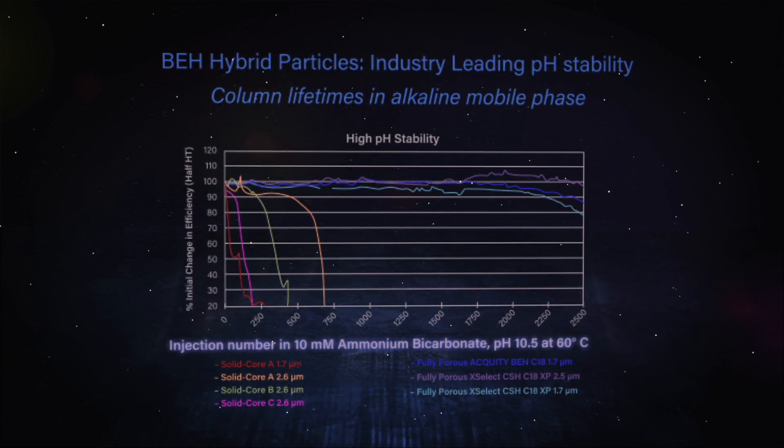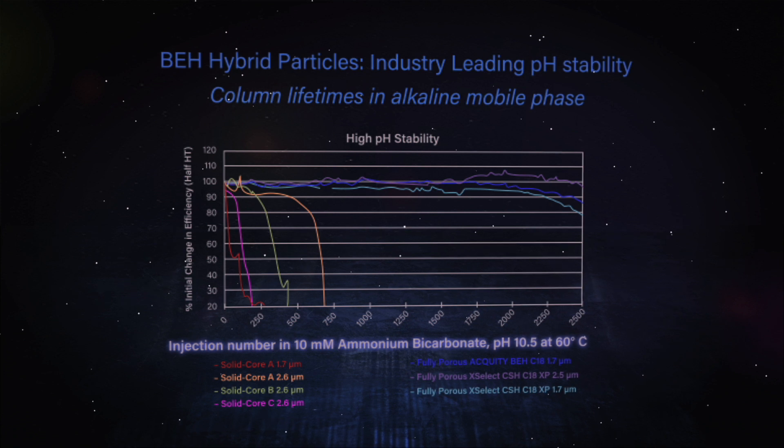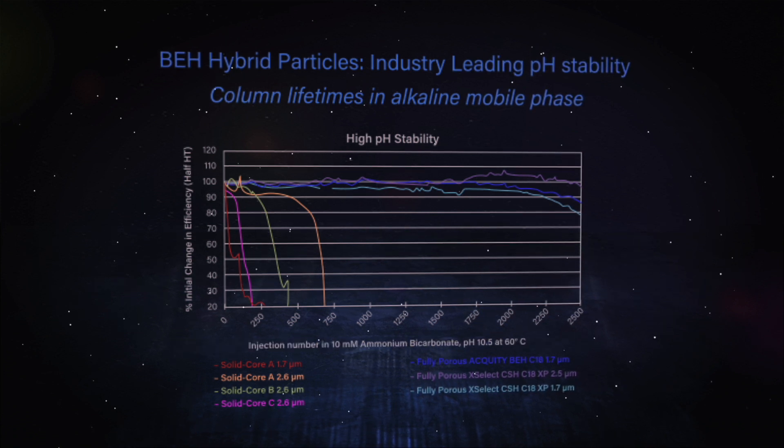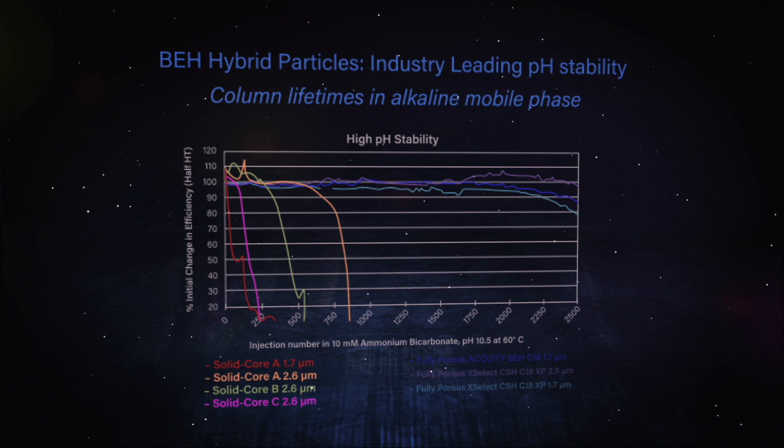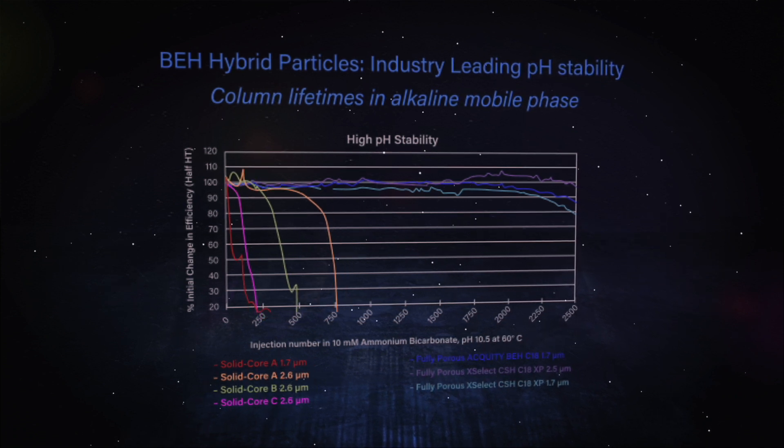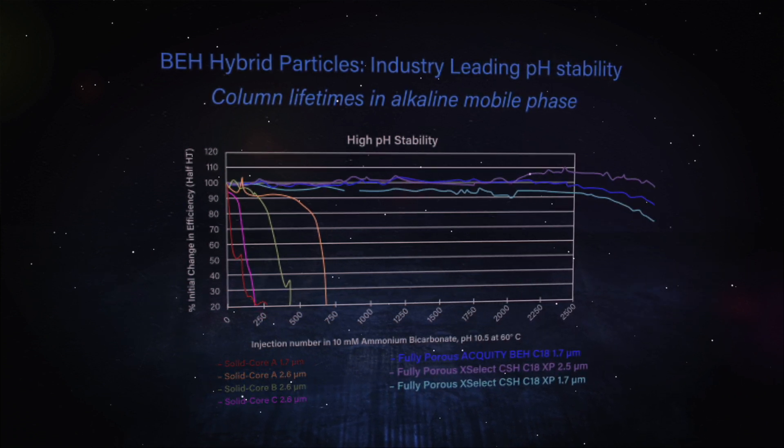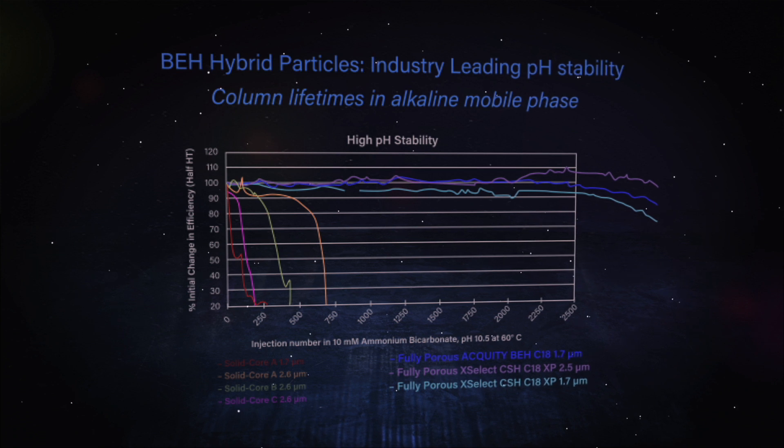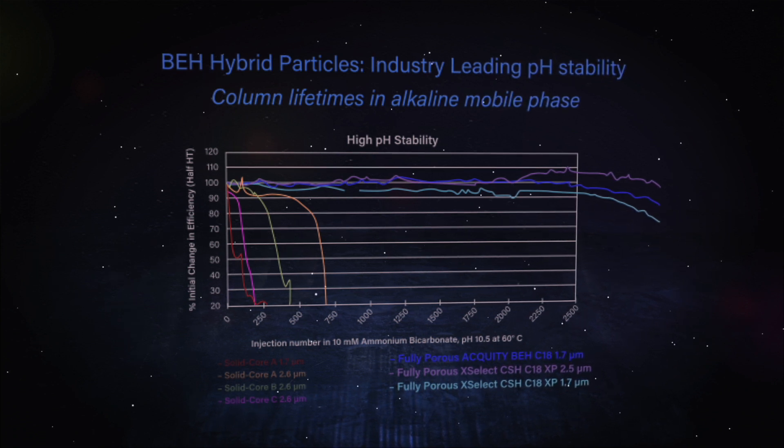So here we've subjected a variety of columns to my favorite column kill test, where we put them in 10 millimolar ammonium bicarbonate at pH 10.5 at 60 degrees C. And you can see from this graph that anything that's silica-based doesn't last very long. But you get really good stability and performance out of columns that are designed for that, such as the hybrid column.